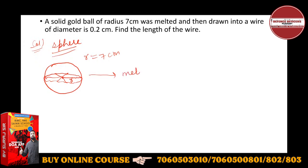It is melted into a wire of diameter. Now a wire is a kind of cylinder only. You have to find the length of the wire - length means you have to find height. This is only the length of the wire.